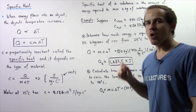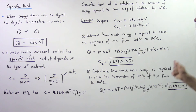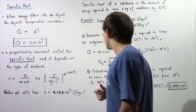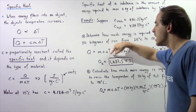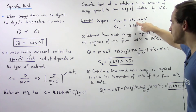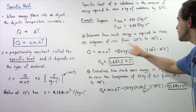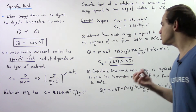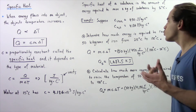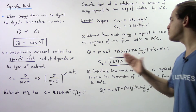In part A, determine how much energy is required to raise 50 kilograms of iron from 25 degrees Celsius to 100 degrees Celsius. We simply use this equation: the amount of energy in joules is equal to M times C times delta T. The mass M is 50 kilograms, C is 450, and delta T is 100 minus 25, which gives us 75. Multiplying these values out, we get 1,687.5 kilojoules of energy required to raise 50 kilograms of iron from 25°C to 100°C.